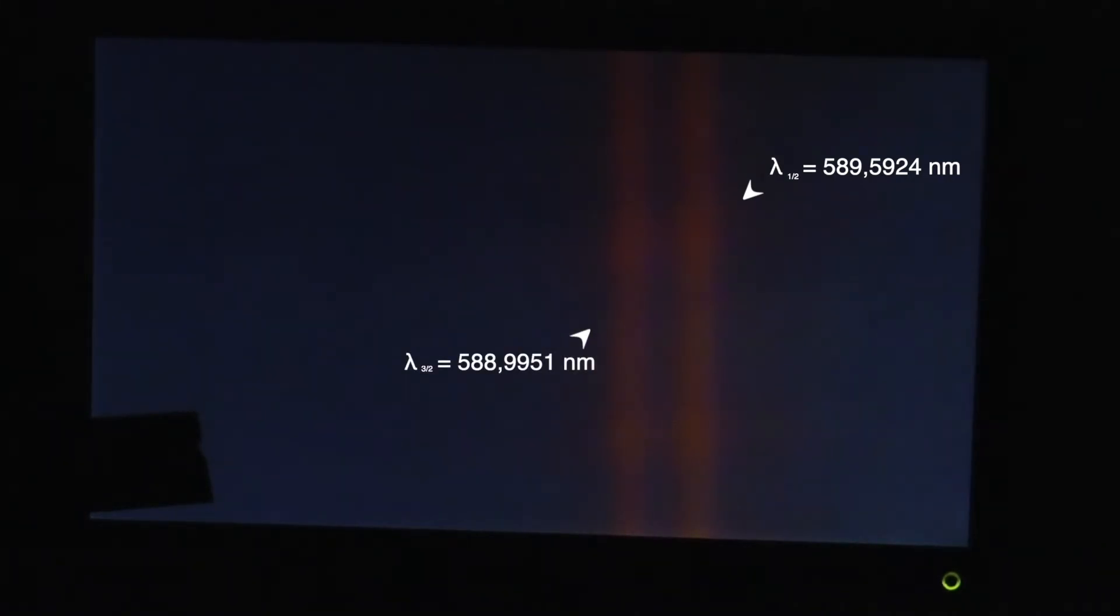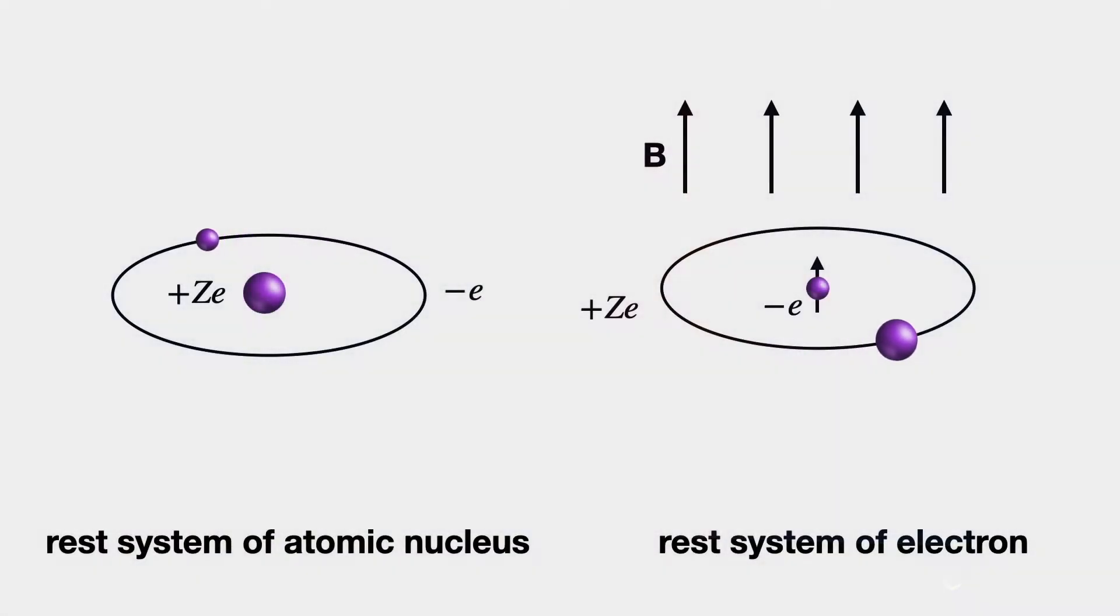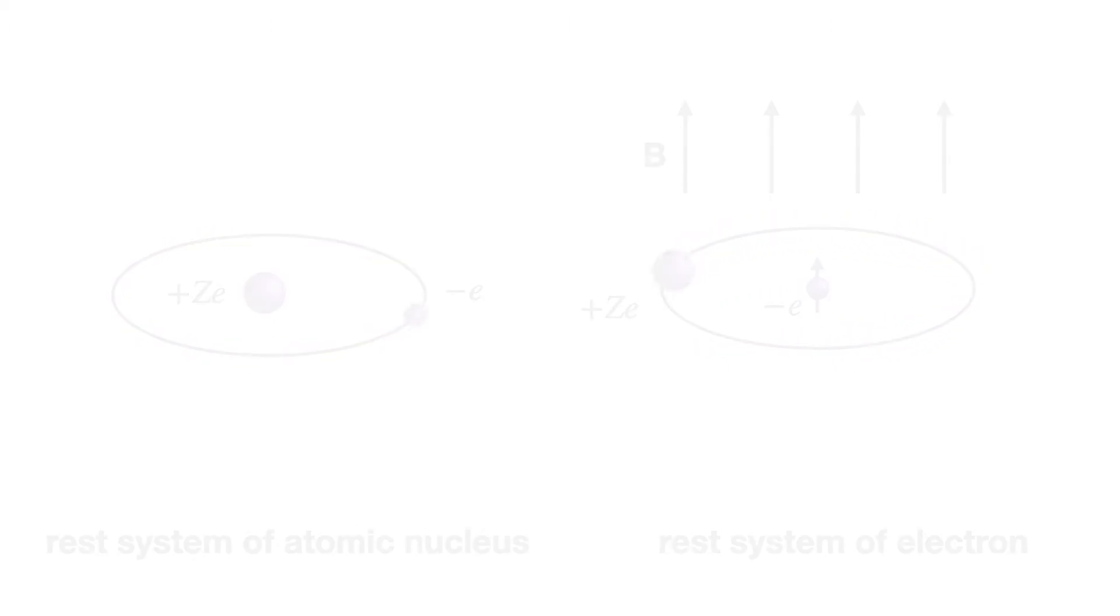The formation of the doublet is caused by the fine structure splitting of the electron binding energy. The reason for this is the spin-orbit coupling and interaction of the magnetic field which is generated by the orbiting of the electrons around the atomic nucleus with the intrinsic magnetic moment of the electrons. The former is linked to the orbital angular momentum of the electron, the latter to its spin angular momentum.